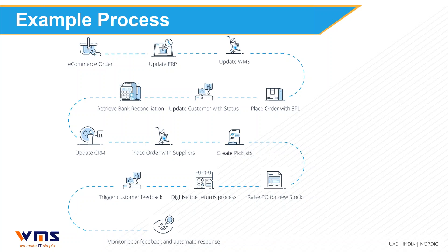As more people buy online, there will be more returns. You need to offer your clients a way of digitally logging returns, being informed about them, and sending them back. You also need to collect customer feedback. In one small process there are perhaps 10 to 15 points of automation where you can speed things up, reduce errors, and save significant time and money.